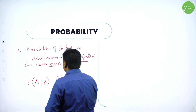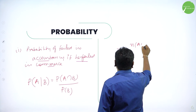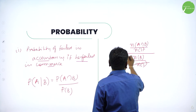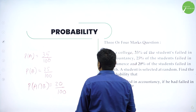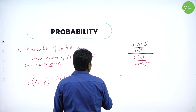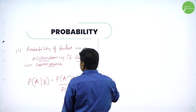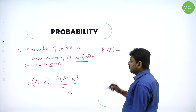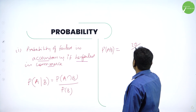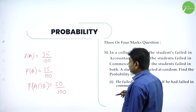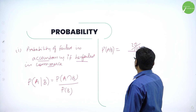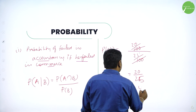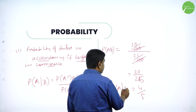Whatever comes in the denominator comes in the denominator: A given B means A∩B divided by B. So now substitute: P(A∩B) = 20/100, P(B) = 25/100. The 100s cancel, giving 20/25. Both are divisible by 5, so the answer is 4/5. So probability of failed in accountancy, if he failed in commerce, is 4/5.